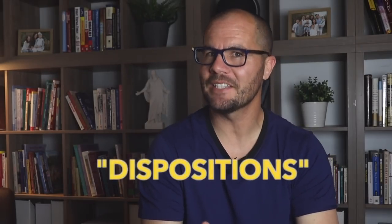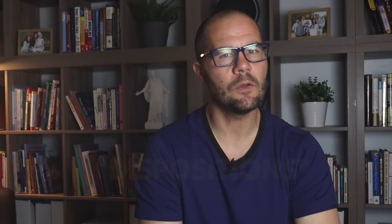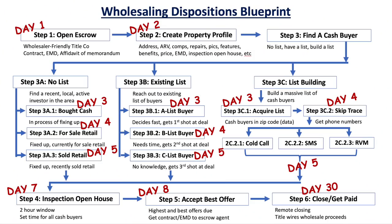In the wholesaling industry, this is often referred to as dispositions. On today's video, I'm going to show you my proven step-by-step process for finding a cash buyer for your deal, even if you don't currently have a single cash buyer, and how to build a massive cash buyer list. I call it my wholesaling distribution blueprint, and this is how you can 10x and scale your wholesaling business as you're doing deals every single month.